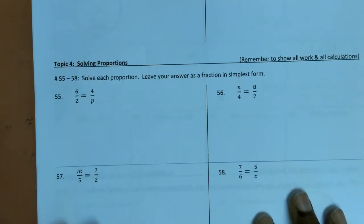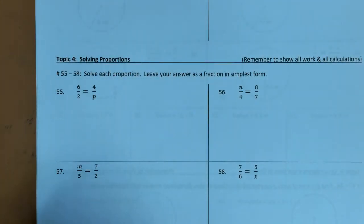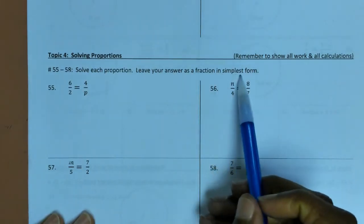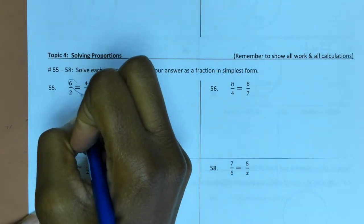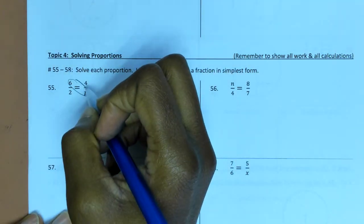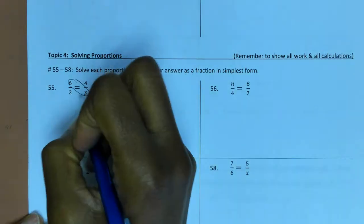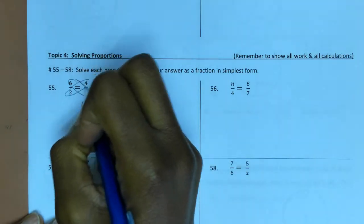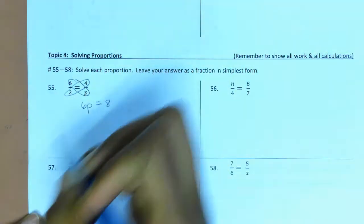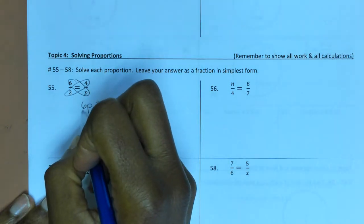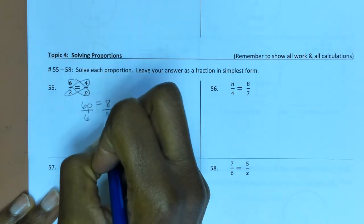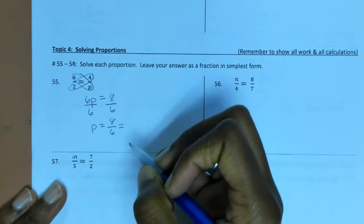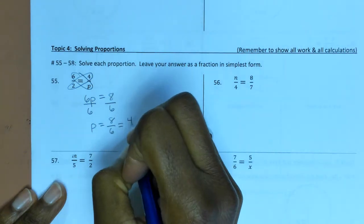Moving on to topic 4: solving proportions. We want to leave our answer as a fraction in simplest form. To solve 6/2 = 4/P, we cross multiply: 6P = 2 × 4 = 8. Dividing both sides by 6 gives P = 8/6, which simplifies — both divisible by 2 — to 4/3.